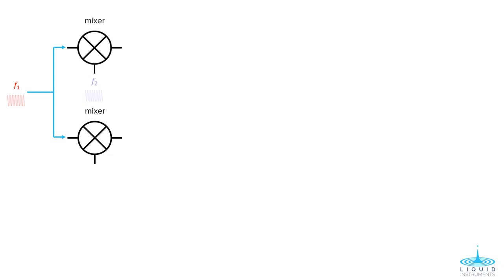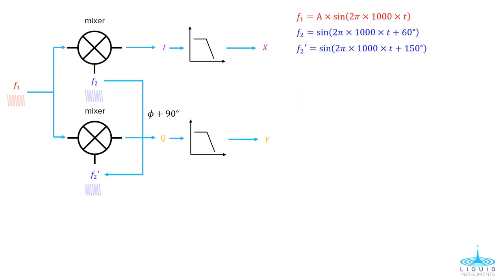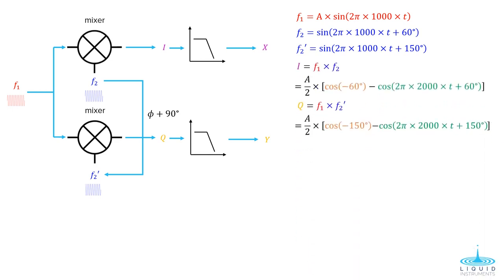Both mixers operate at the local oscillator or LO frequency, but are 90 degrees out of phase with respect to one another. This allows the lock-in to simultaneously demodulate at two phases and get two outputs. Let's go over the math and then demonstrate this interactively with Moku Lab. We have our signal, F1, and two LOs, F2 and F2'.